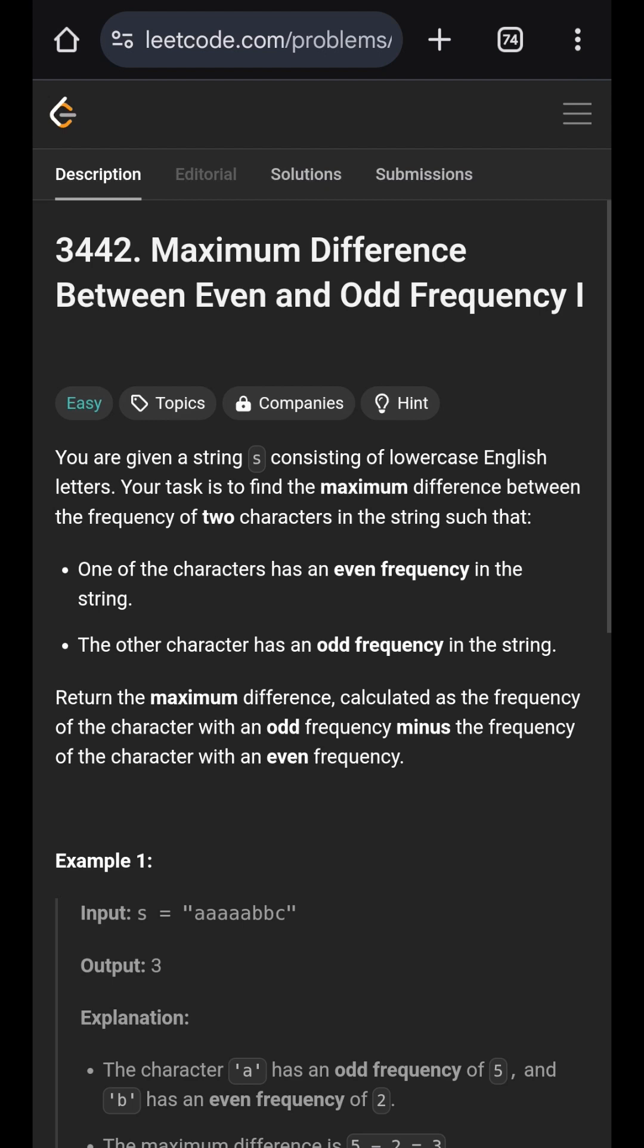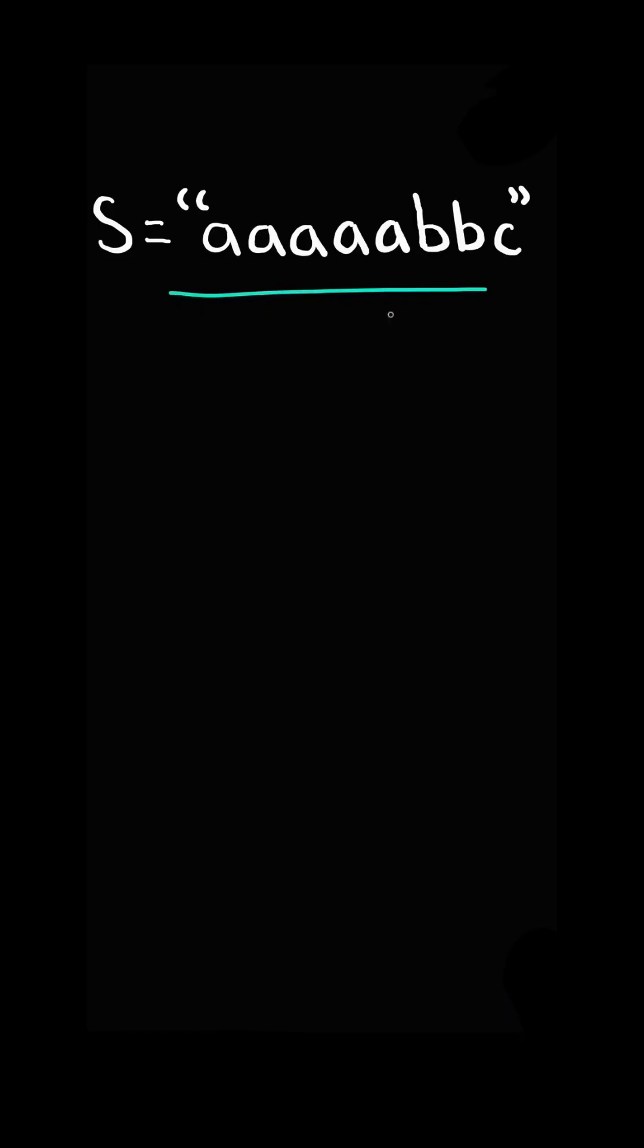Maximum difference between even and odd frequency 1. Given a string s, count the occurrences of each character, return the maximum difference of an odd frequency minus an even frequency.